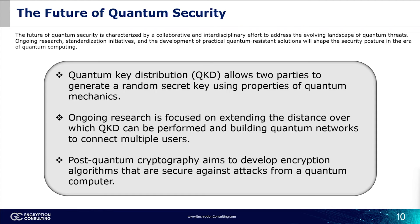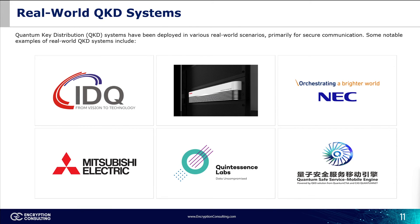What does the future of quantum security look like? As we unravel the secrets of quantum mechanics, we discover innovative ways to safeguard our communication. The quantum laws that once posed threats are now becoming the foundation of a new era in data security. Ongoing research is focused on extending the distance over which QKD can be performed and building quantum networks to serve multiple users. Post-quantum cryptography aims to develop encryption algorithms secure against quantum computer attacks. Some real-world QKD systems already exist, including IDQ, Mitsubishi Electric, and Quintessence Labs.